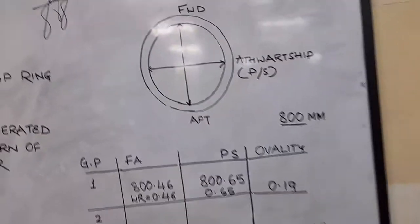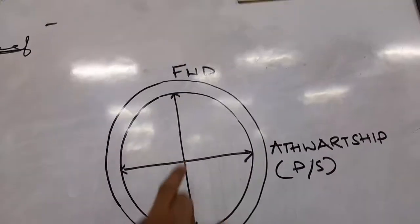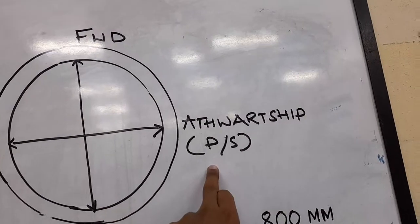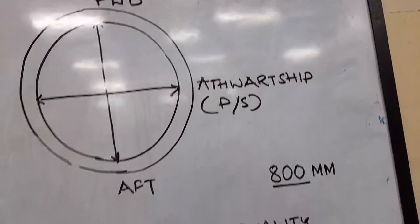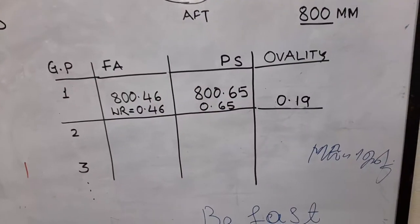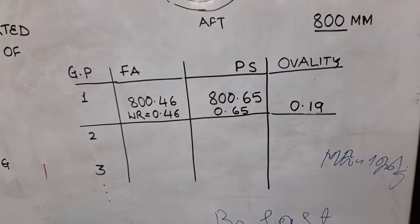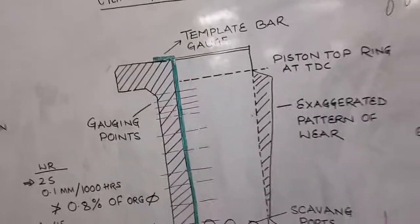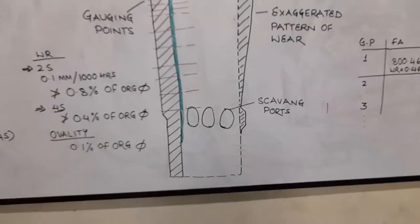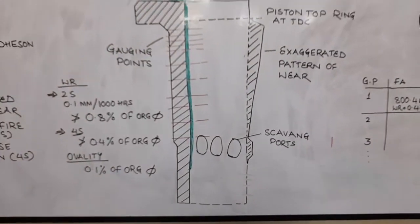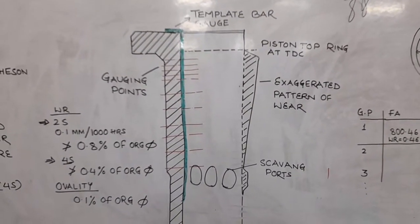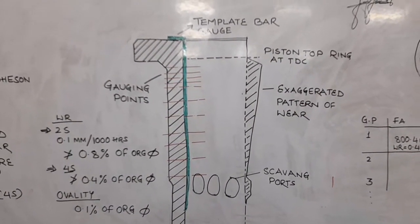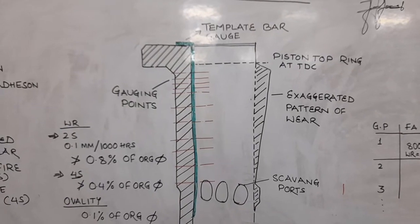Now we have the boat. Aft forward in the column, port, starboard in the column. This is the center of the column. This is the cylinder liner. This is the column.